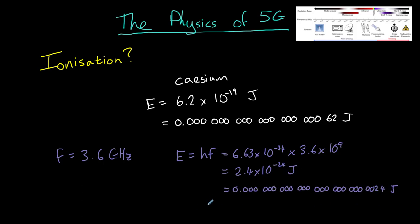Or to put it more simply, it is 260,000 times smaller than the energy that is needed to ionize even the most easily ionized atom, which is cesium. So we can safely say that 5G radiation is not ionizing. The photons simply do not have the energy that would be needed to ionize any of the atoms in our bodies.